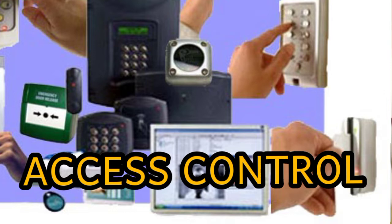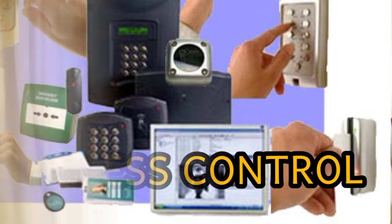We shall look at access control in three forms or three types. First is discretionary access control, where control lies in the hands of the owner of the company. Second is rule-based access control, where rules are put in place and must not be violated — for example, you should not enter without a trust application, or you should not enter these premises without a mask.